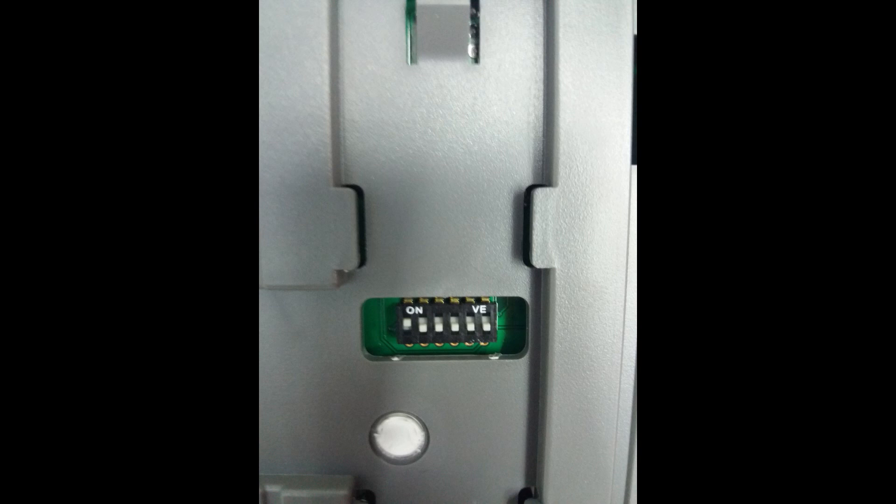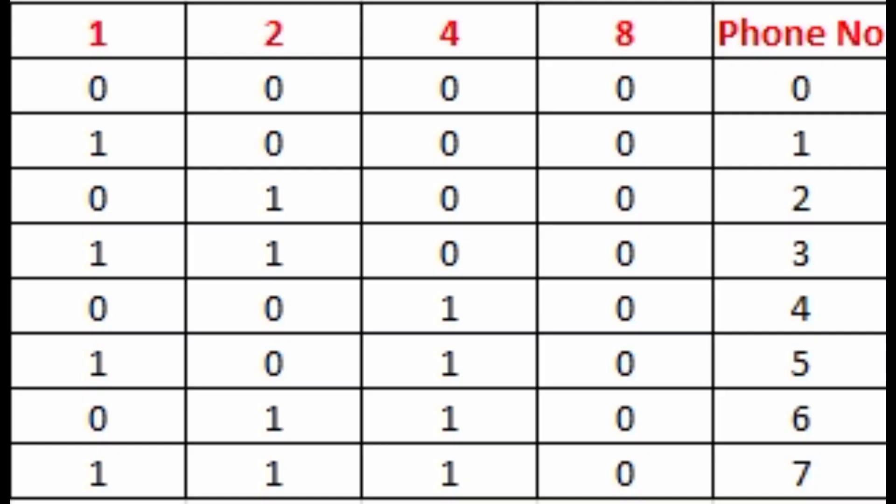If the first number is high, that means on, and rest of the numbers are all off, it is noted as one. And the first one is off and second one is on and four eight both are off, that means number two.